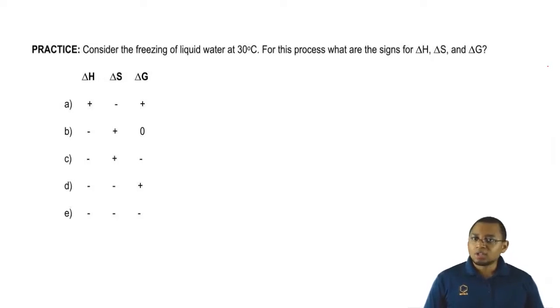If it's spontaneous, delta G will be negative. If it's non-spontaneous, delta G will be positive. Knowing all this, try to answer this question as best as you can. Once you're done, click on the explanation button and take a look at a video of me explaining how to approach this problem. Good luck guys.